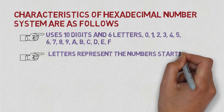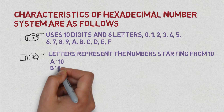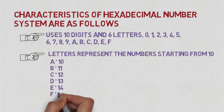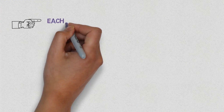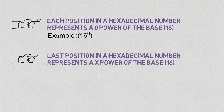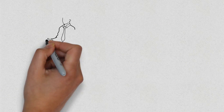The letters represent numbers starting from 10: A = 10, B = 11, C = 12, D = 13, E = 14, F = 15. It is also called the base-16 number system. Each position in a hexadecimal number represents a power of the base 16, for example 16⁰. The last position represents 16^x, where x is the last position.